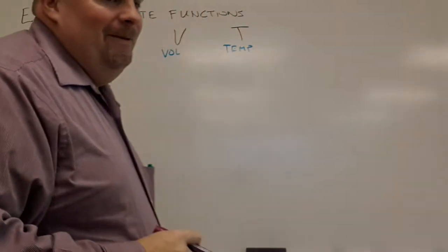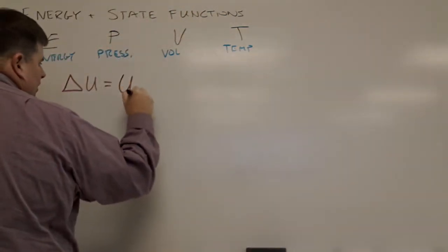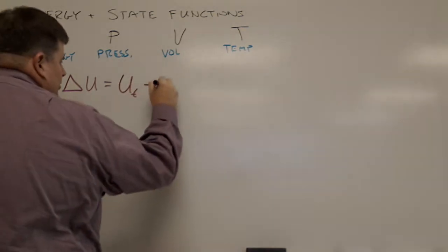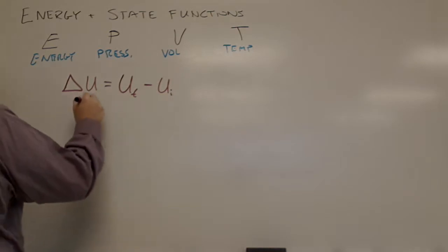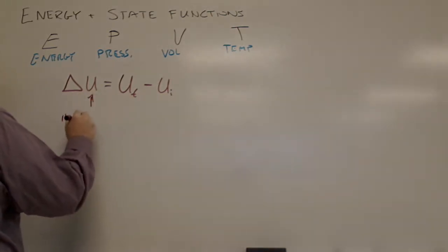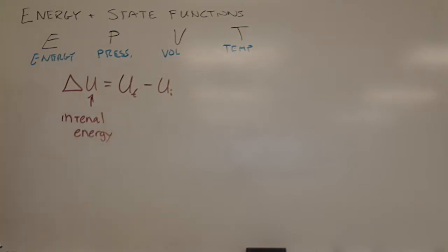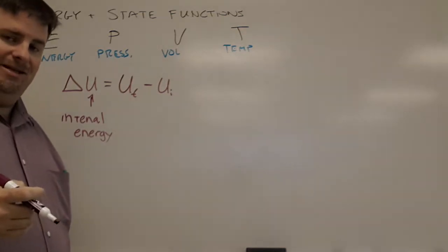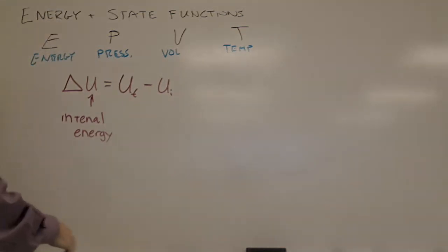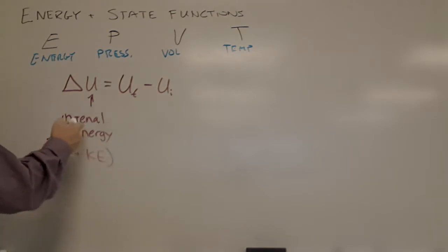The change in U is U-final minus U-initial. U is identified as the internal energy of a system — it's a combination of both potential energy (PE) and kinetic energy (KE).